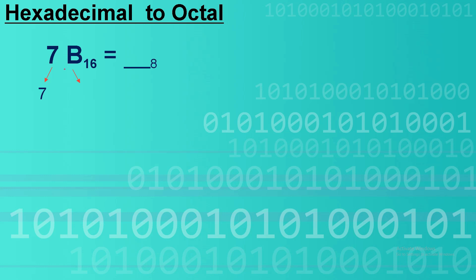Since 7 is already decimal, we put 7. And since the equivalent of B in decimal is 11, we will put 11 here. So the next step is to convert these two decimal numbers to binary.